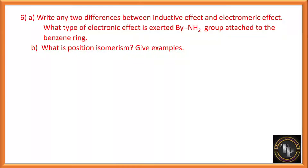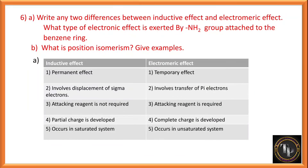Write any two differences between inductive effect and electromeric effect. Inductive effect is a permanent effect; electromeric effect is a temporary effect. Inductive effect involves displacement of sigma electrons; electromeric effect involves transfer of pi electrons. Attacking reagent is not required in the inductive effect; it is required in the electromeric effect. Partial charge is developed in inductive effect; complete charge in electromeric effect. Inductive effect occurs in saturated systems; electromeric effect occurs in unsaturated systems.